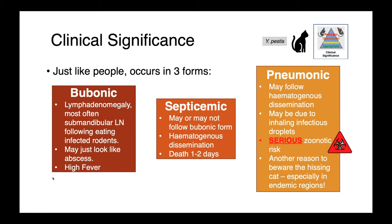Cats who have pneumonic plague that may be expiring the organism — breathing it out when they hiss at you — present a very serious threat to people in their proximity. If you were to breathe in those infectious droplets, you could develop pneumonic plague yourself, which is rapidly fatal. So if you're living in or practicing in an endemic region, beware the hissing cat.